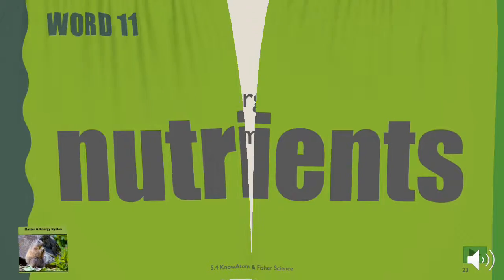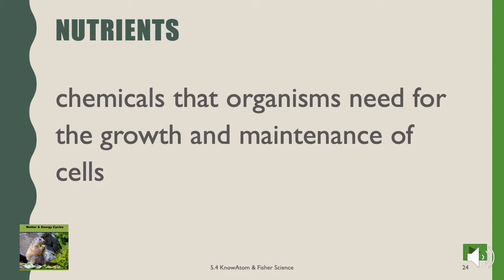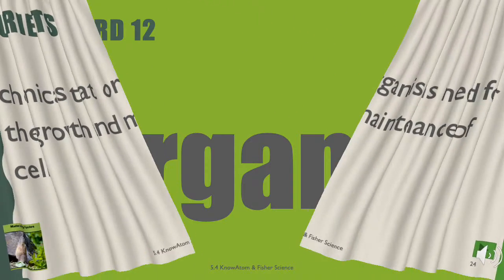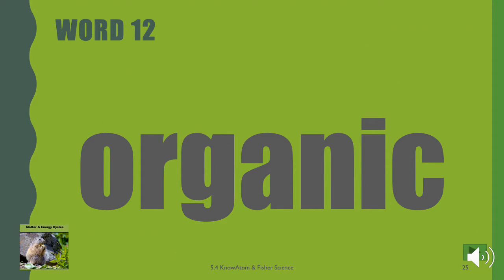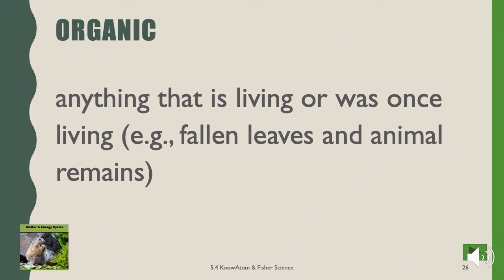Nutrients. Nutrients are chemicals that organisms need for the growth and maintenance of cells. Organic. Organic means anything that is living or was once living, like fallen leaves, animal remains, an animal, a plant.